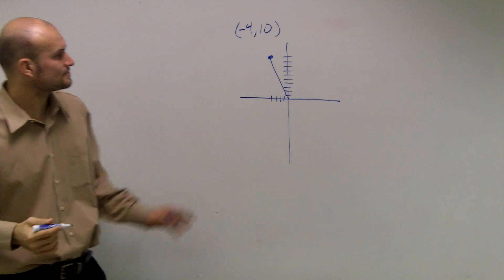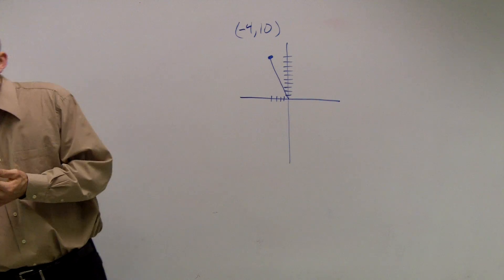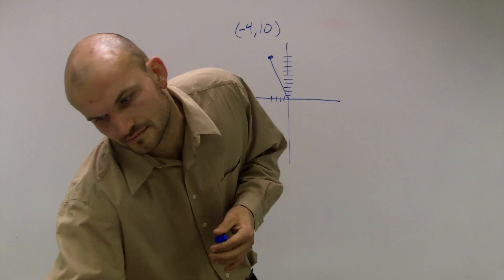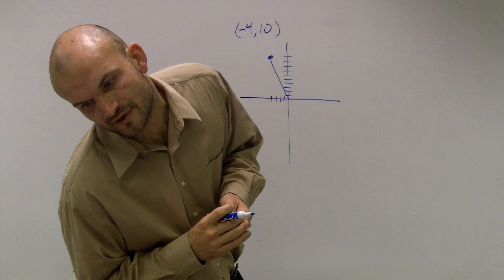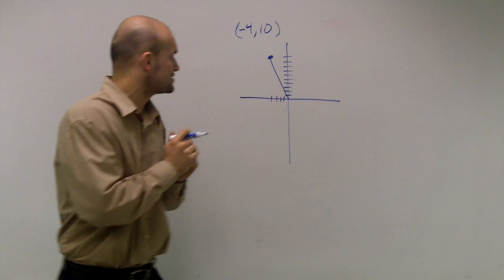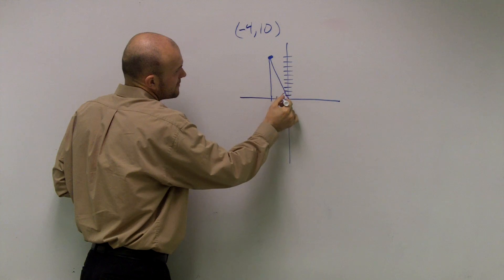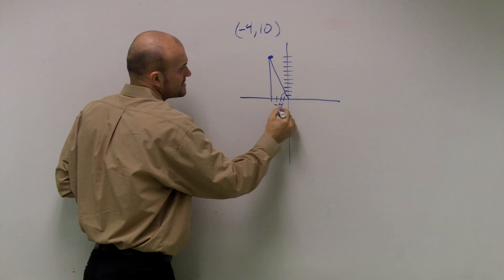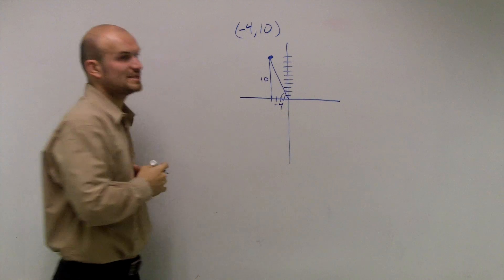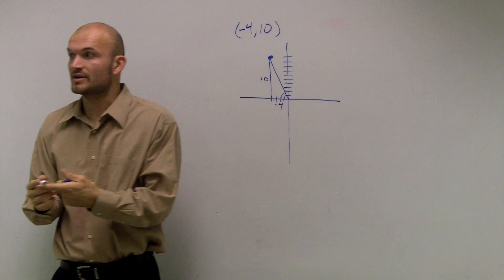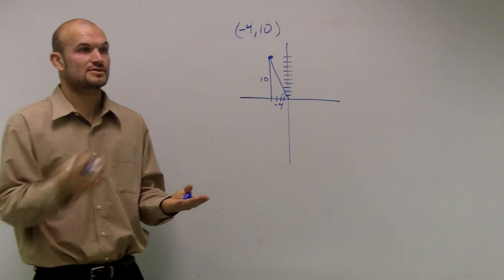So pretty much what they want us to do now is they want us to evaluate for the six trig functions. So if I was to create a right triangle for this angle theta, I could say this is negative 4, and that would be 10, right? Now remember, they said evaluate the six trig functions.